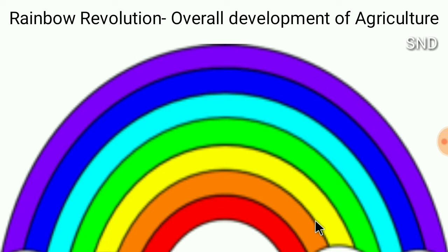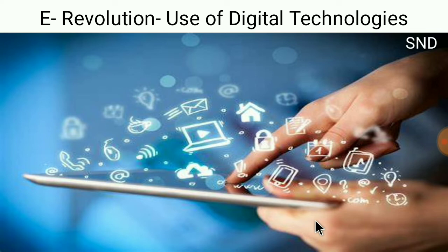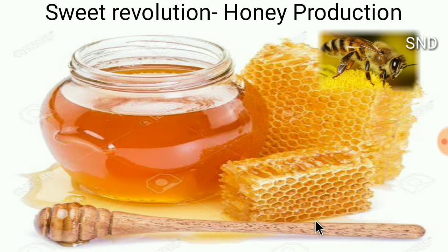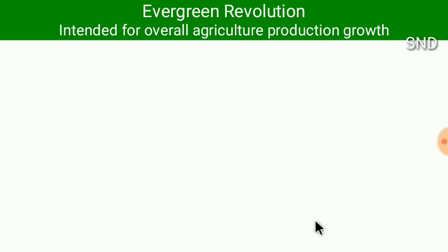Rainbow Revolution is related with overall development of agriculture. E Revolution is related with the use of digital technologies in agriculture. Sweet Revolution is related with honey production. The Evergreen Revolution is related with the intention of overall agricultural production growth.